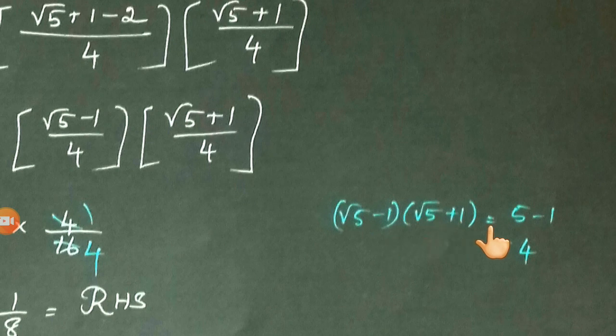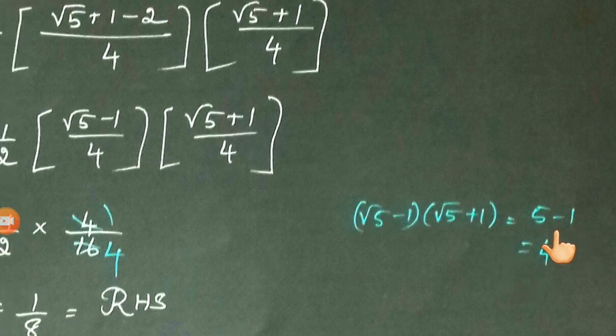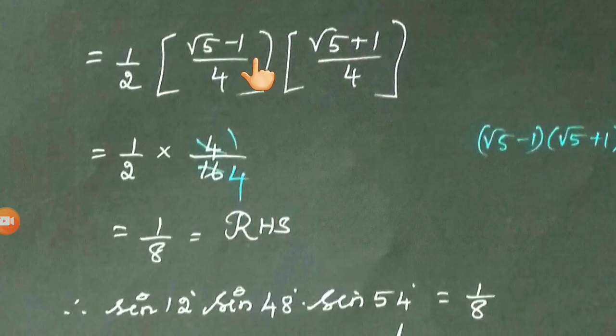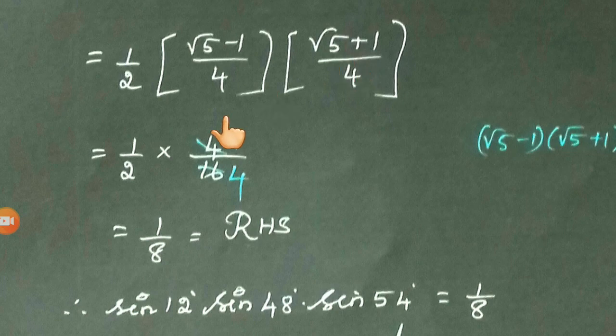√5 squared is 5 minus 1² is 1, giving a² - b² = 4. Therefore, in the numerator we have (√5 - 1)(√5 + 1) = 4. 1/2 × 4/4, and 4 × 4 = 16. Cancel: 4/16 = 1/4 multiplied.